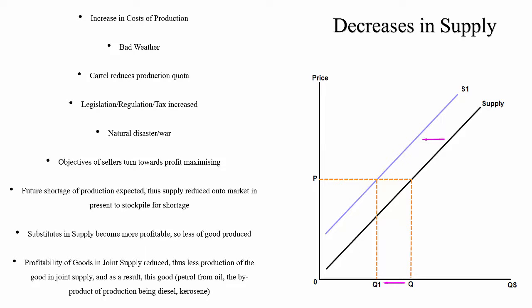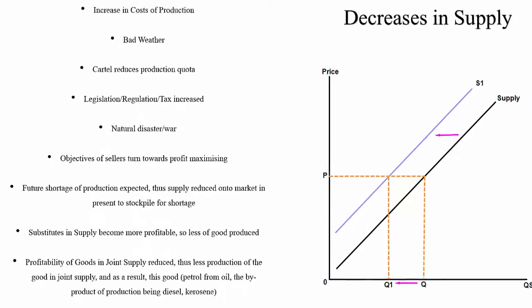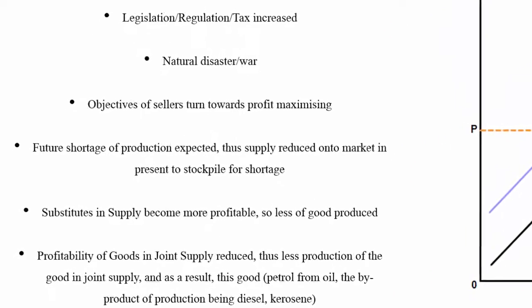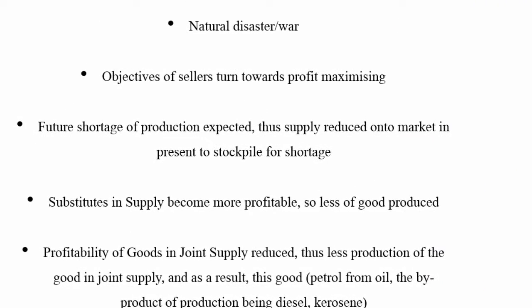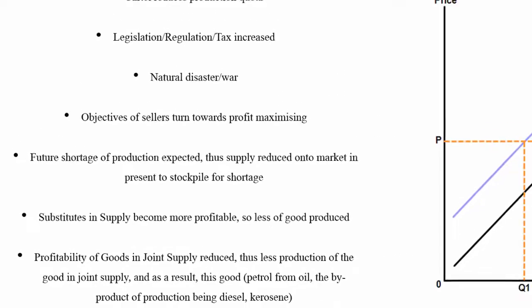If we take an example of the objectives of sellers, if they turn towards profit maximization, sellers and producers would restrict the amount of supply they produce in order to raise the price of their product. If there's a lower supply of it there should be a higher price.